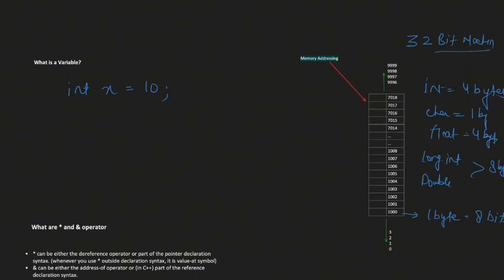These numbers will change on a 64-bit machine, but we are only talking about 32-bit right now. So whenever I declare int x = 4, my memory manager allocates some space — let's say four bytes at addresses 1003 through 1006. The value of x resides in these four bytes. The address of x is 1003, which is the starting address. If I declare a pointer int* ptr, the memory manager also allocates four bytes for ptr, say at address 7013.